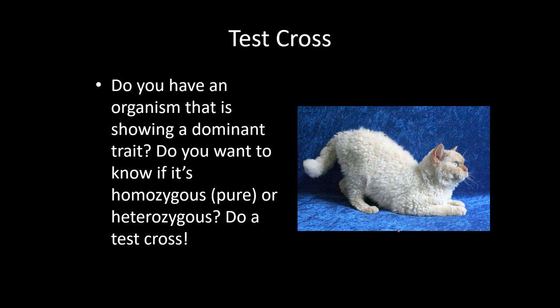Next in the notes is the test cross. The basic idea is: let's say you find some animal or plant and you want to know whether it's purebred. In this context, purebred means homozygous for a condition you want, whereas a mutt would be heterozygous — having one dominant and one recessive allele. A test cross helps you know for sure whether the animal is homozygous or heterozygous.